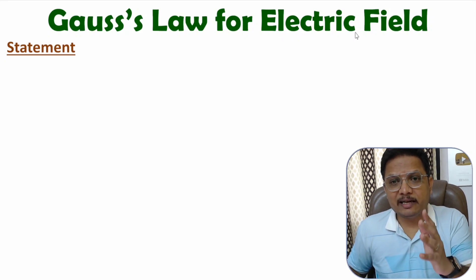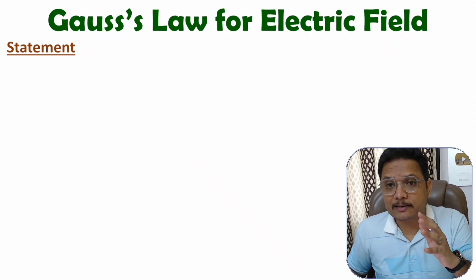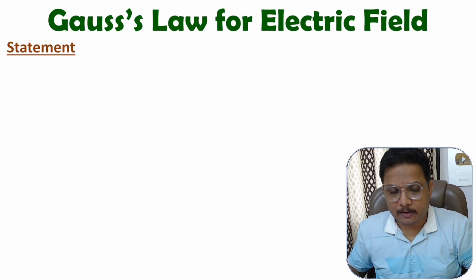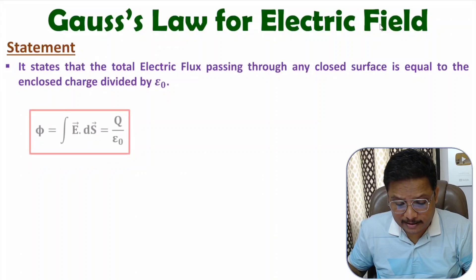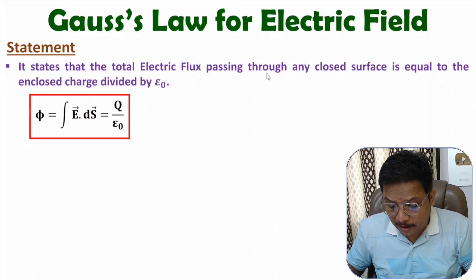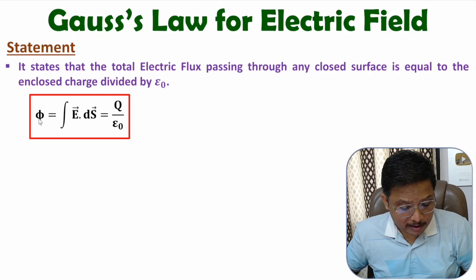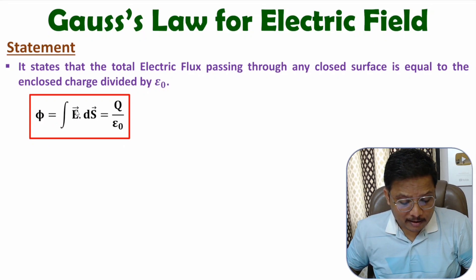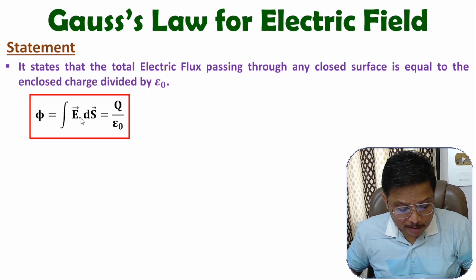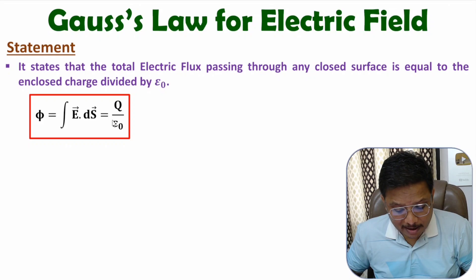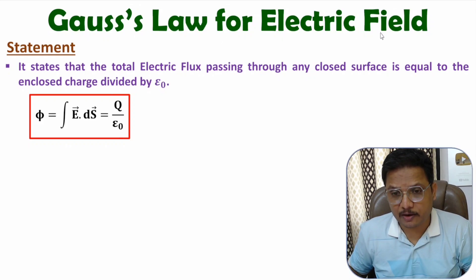Gauss's law for electric field states that the amount of flux passing through an enclosed surface is charge divided by epsilon naught. The basic statement is: total flux passing through any closed surface is equal to charge divided by epsilon naught. Electric flux is the integration of electric field with respect to surface. For any closed surface, total flux is charge divided by epsilon naught.